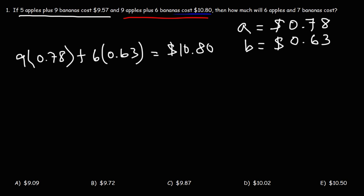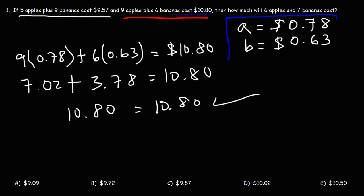So 9 times 0.78, that's 7.02. 6 times 0.63 is 3.78. 3.78 plus 7.02 is 10.8. So both equations have been satisfied by these values. So we know that they're correct.